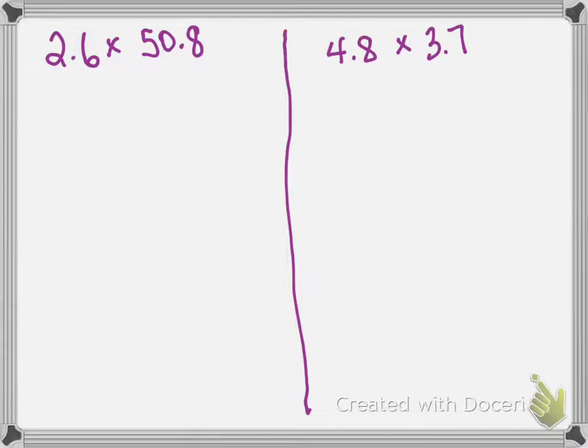So my first problem here, 2.6 times 50.8. I'm gonna begin by placing the number with the most number of digits on top, so I'm going to write 50.8 times 2.6. Once I've set my problem up, I go ahead and begin cross multiplying with my smallest place value, which will be my 6, and I just ignore the decimal until the end.